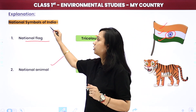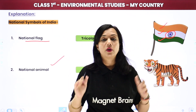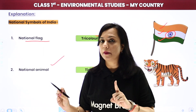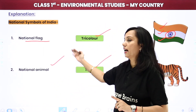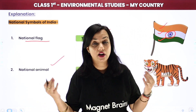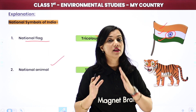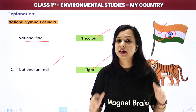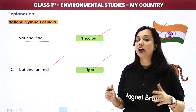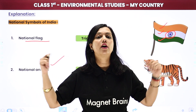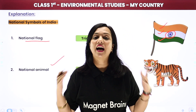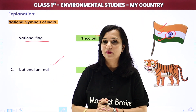We are discussing national symbols of India - the most important symbols of India. Jis mein humne first kya padha - we learnt about our national flag, which is of three colors, that is why it is said tricolor flag, jis mein kaun kaun se color hain: saffron, white aur green. Next jo humne kiya - hamara national animal kaun hai. We call tiger our national animal children.